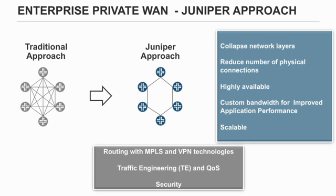With the Juniper approach, the number of connections are reduced dramatically. Instead of dedicated links, physical infrastructure can be logically partitioned and shared to scale to requirements. The solution provides the ability to customize bandwidth and prioritize applications with the changing demands of the business. Juniper's private WAN solutions can help you simplify your network not just at one, but three levels: physical, logical and operational.